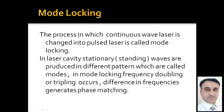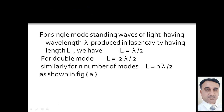In laser cavities, stationary waves or standing waves are produced in different patterns. These patterns are called modes. For a single mode, standing waves of light having wavelength lambda produced in a laser cavity of length L, we can write: L = lambda/2. For double mode: L = 2·lambda/2, and for triple mode: L = 3·lambda/2.